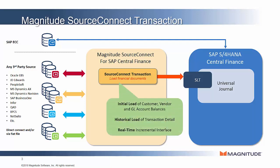Its job is threefold: first, to load opening balances for customers, vendors, and GL accounts; then a historical load of detailed transaction data for a period of time; and finally converting into operational mode, where in a near real-time manner it will take transactions that are posted in source systems and replicate them into Central Finance.